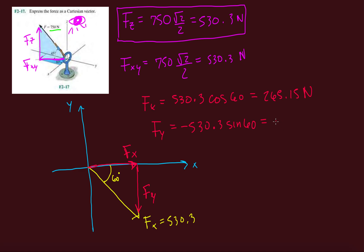And then minus 459.3 Newtons. And then if we write this down in vector form, we're going to have 265.2 I, minus 459.3 J, plus